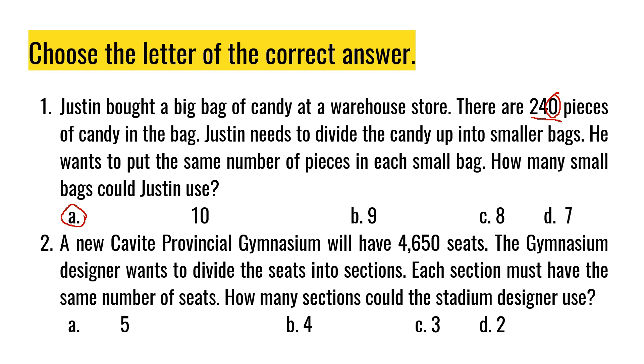So since the number is 4,650, nagtatapos ang number sa 0, so pwede natin sabihin na ito ay maaaring... ang sagot ay 5 or 2.